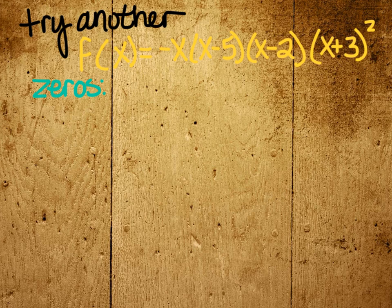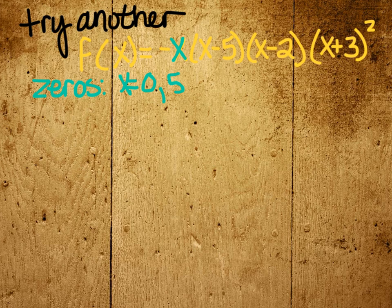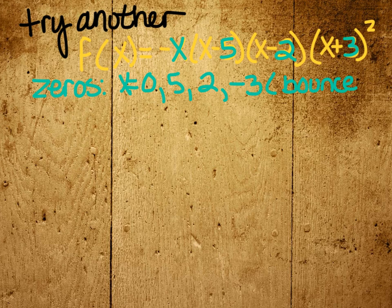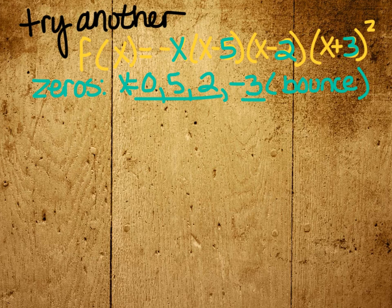First thing we want to do is find the zeros, and those are at x equals 0 for this one, 5 for this one, 2 for this one, and negative 3 for this one twice. So I'm going to write bounce. If we were asked what the multiplicities were, you could tell me that these three have a multiplicity of 1, this one has a multiplicity of 2.